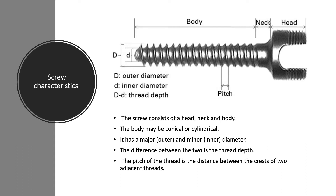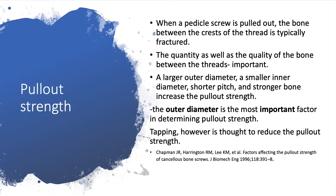Now let's see how screw characteristics can affect the biomechanics of a pedicle screw, specifically its pull-out strength. When a pedicle screw is pulled out, the bone between the crest of the thread is typically fractured. The quantity as well as the quality of the bone between the threads is important. A larger outer diameter, a smaller inner diameter, a shorter pitch, and stronger bone increase the pull-out strength.